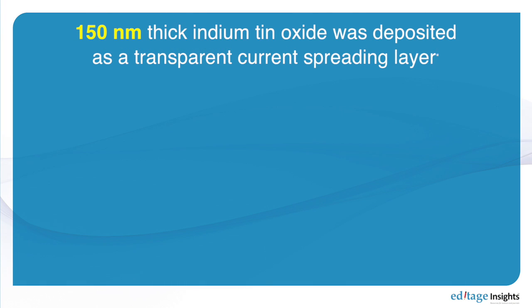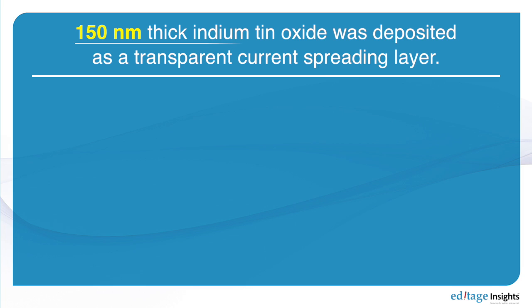As an example, I can say: '150 nanometer thick indium tin oxide was deposited as a transparent current spreading layer.' This sentence is a little bit confusing. The point is the 150 nanometer thick ITO layer.